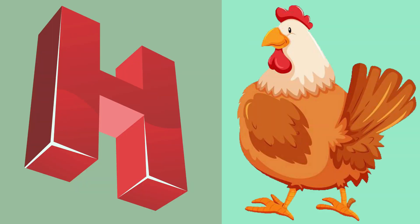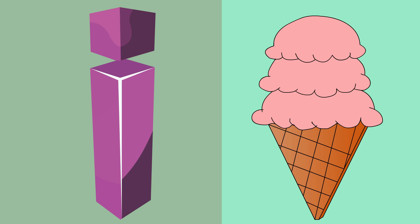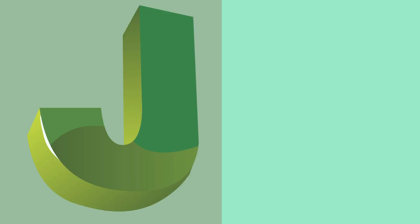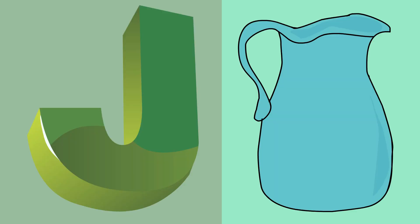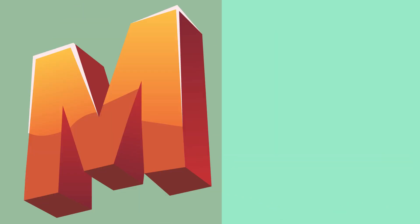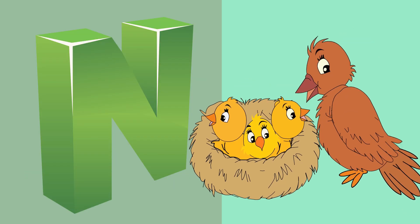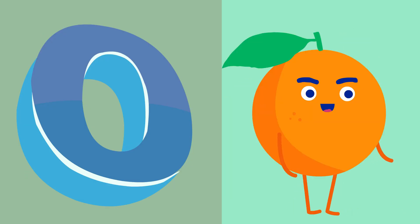H for hen, I for ice cream, J for jag, K for king, L for lot, M for mango, N for nest, O for orange.